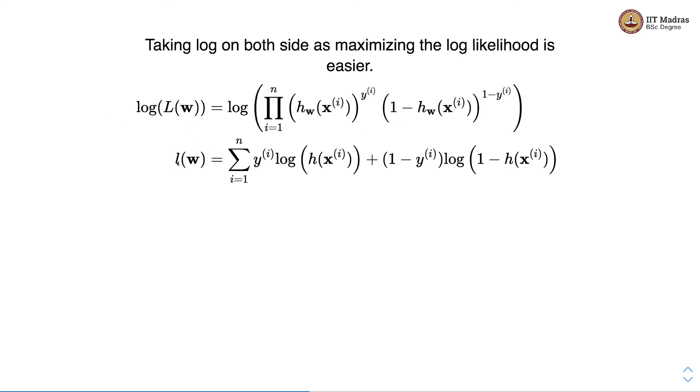Log of likelihood is written as l of w and once we take log inside the bracket and apply simple algebraic rule we get the log likelihood as summation over all n examples: yi log of h of xi plus 1 minus yi log of 1 minus h of xi.